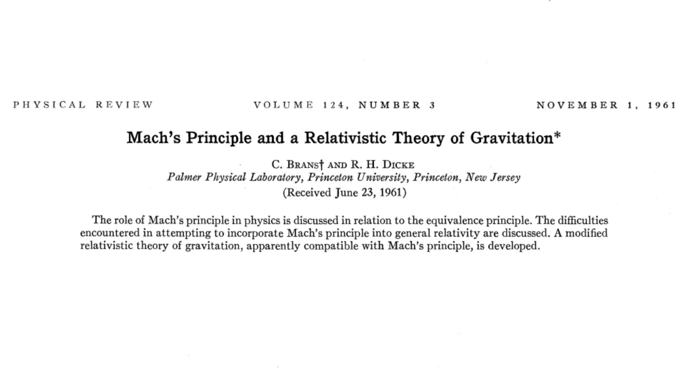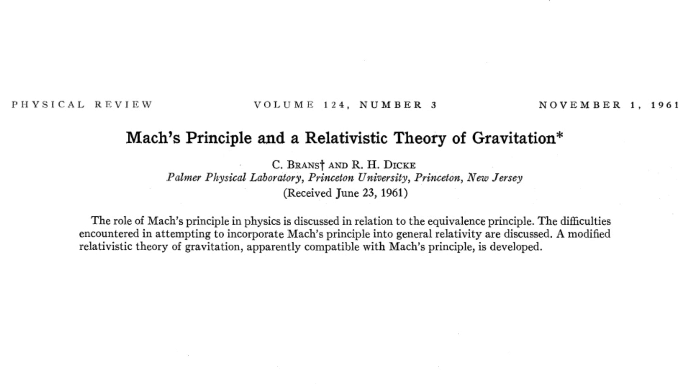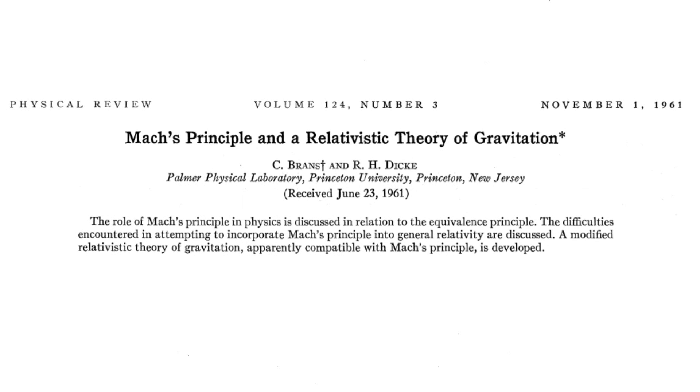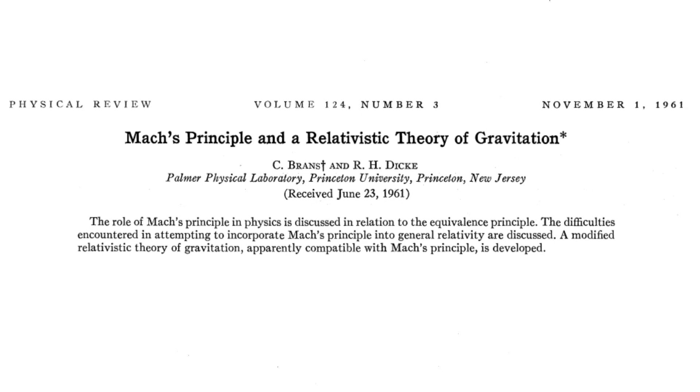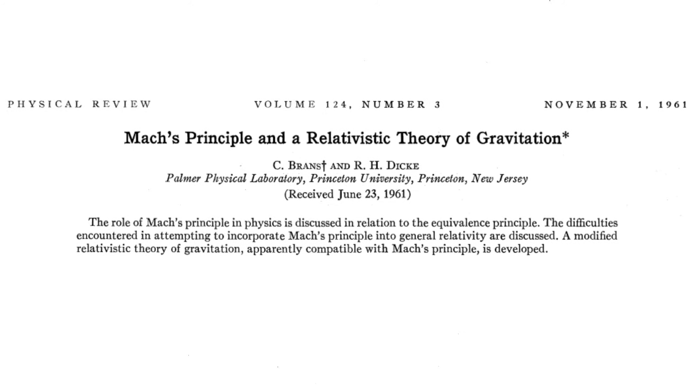Robert Dicke and Karl Brands developed in their 1961 article Mach's principle and a relativistic theory of gravitation, a scalar tensor theory of gravity known as Brands-Dicke theory. They considered a scalar field that determined the effect of gravitational constant varying in space and time, which depended on the mass distribution of the universe. Although featuring a Machian behavior, it did not modify inertia and was constrained by observations, showing that its deviations from general relativity would be extremely small.